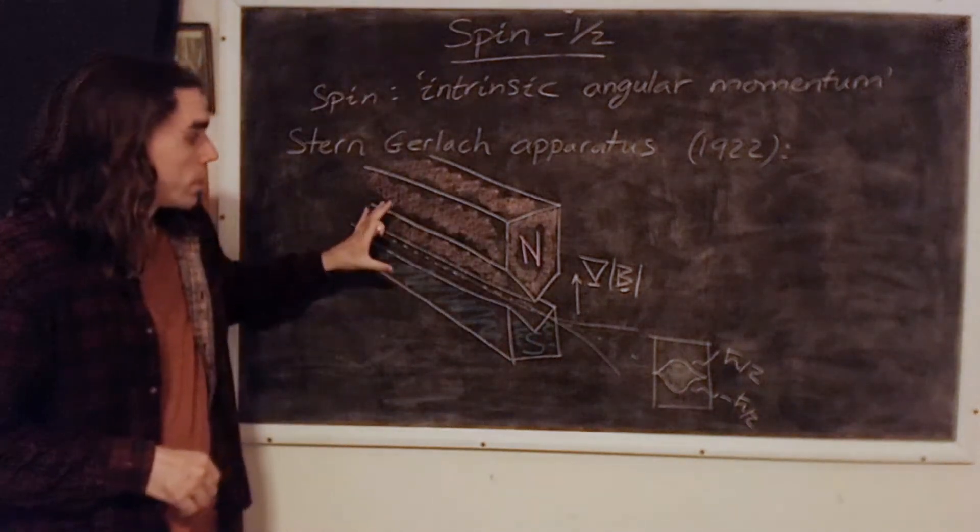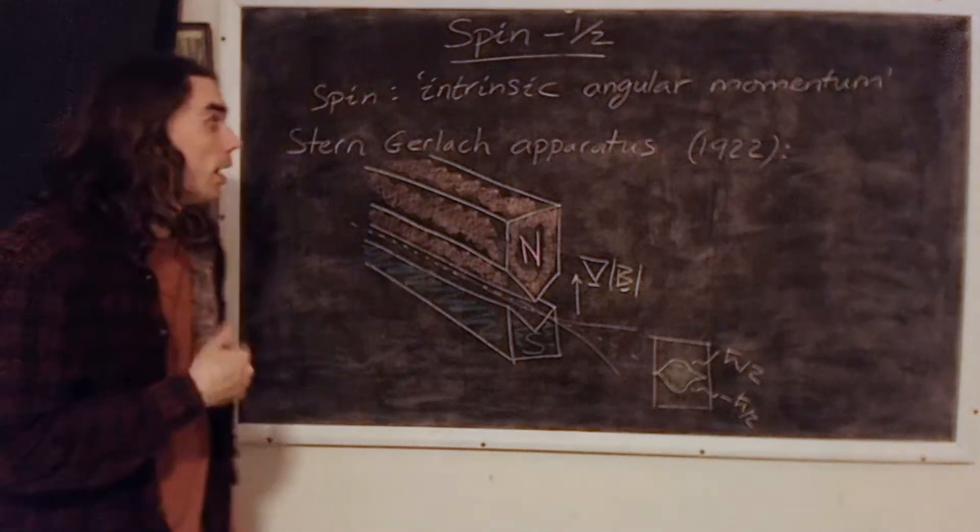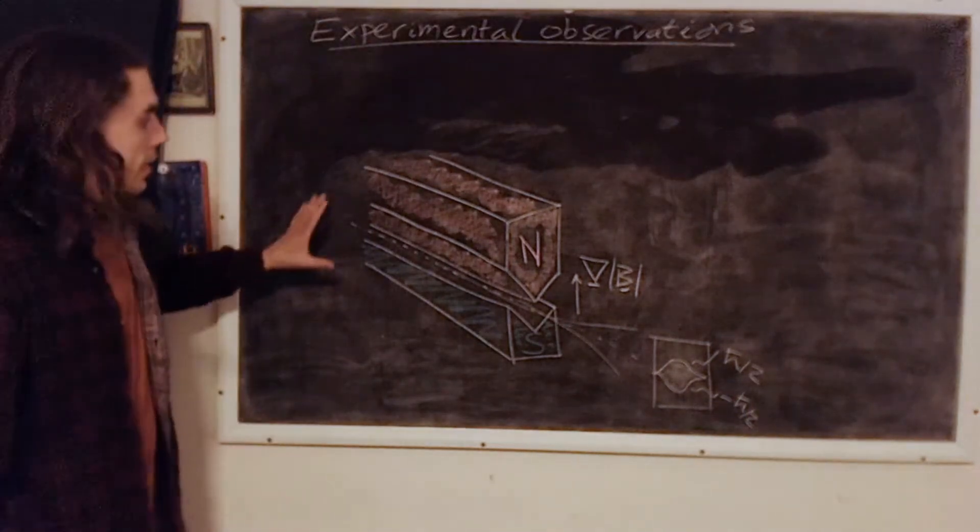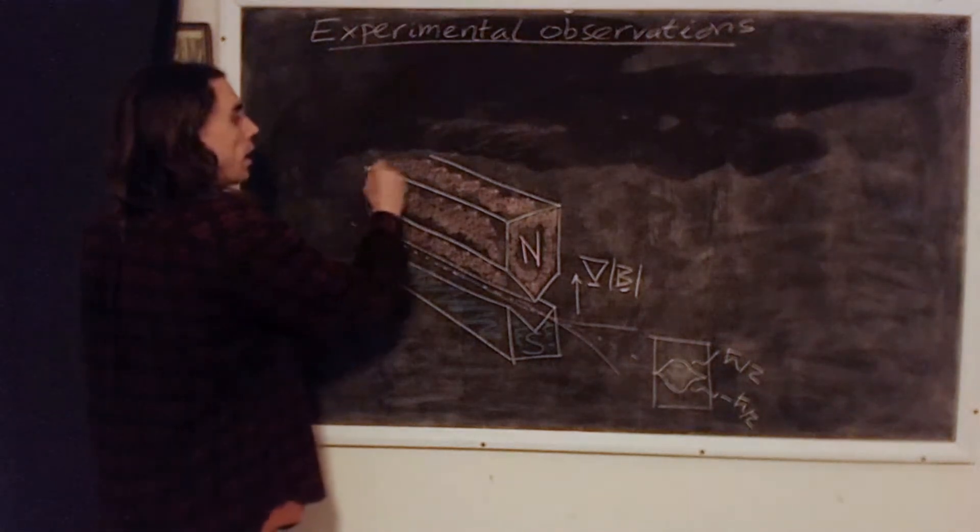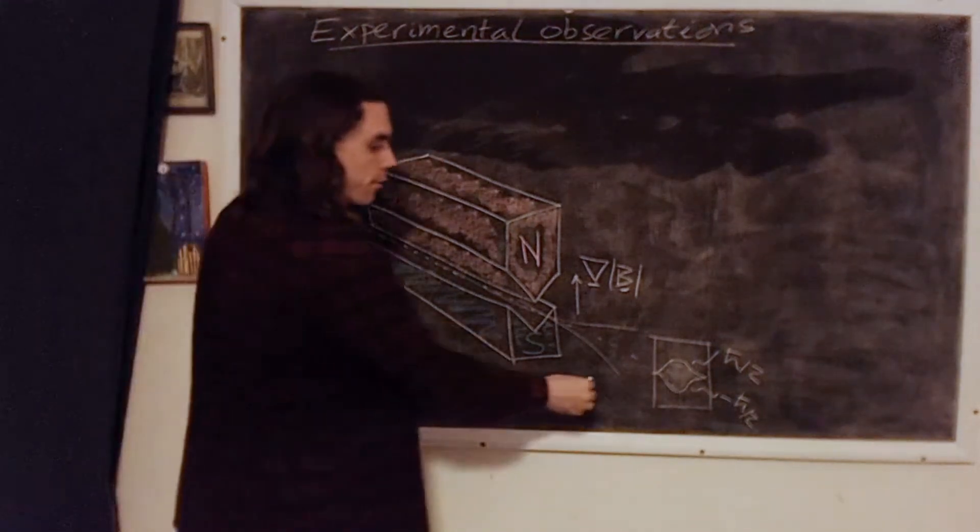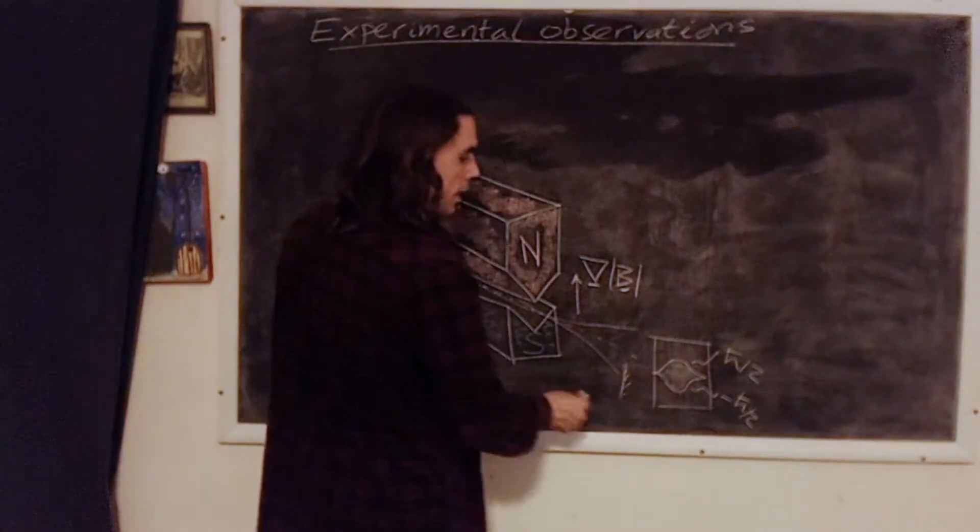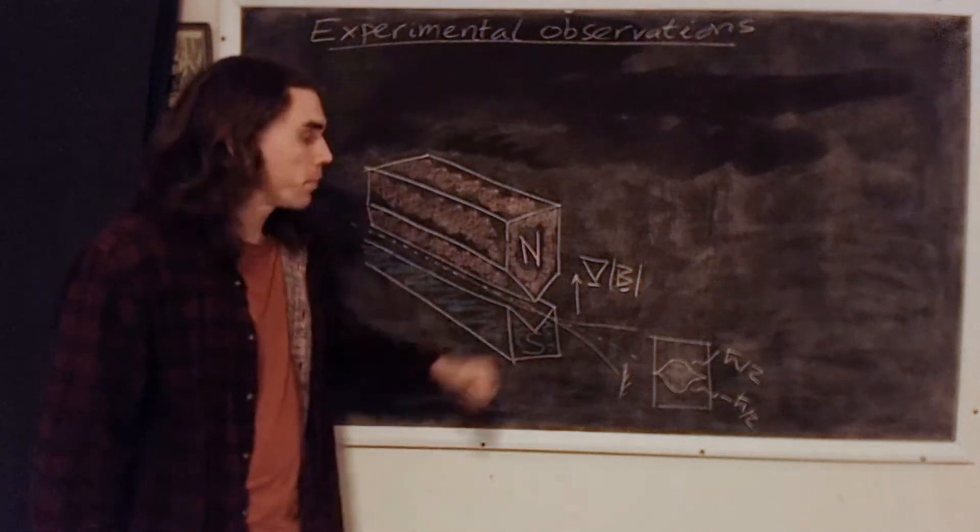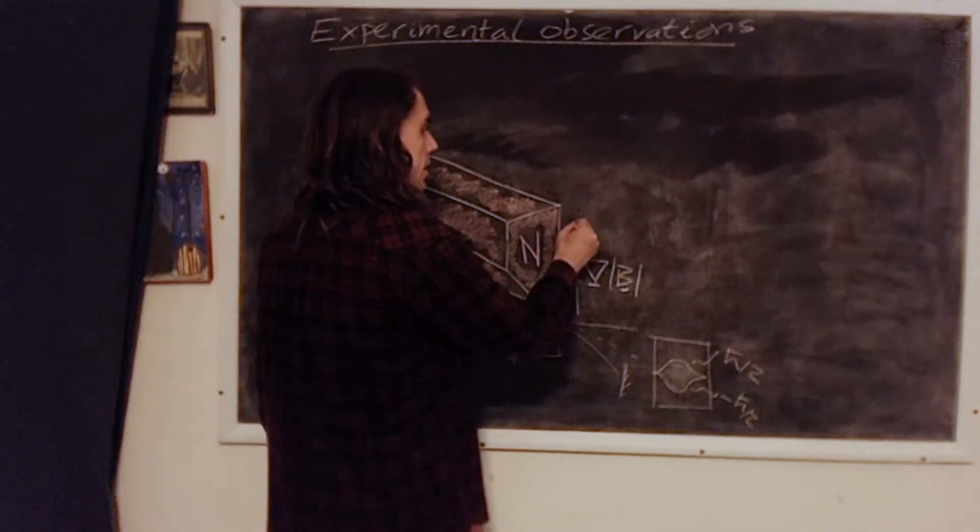So we can deduce various things from applying these Stern-Gerlach apparatuses to beams of electrons. Here are the experimental observations. Taking our Stern-Gerlach apparatus, we can place a block in front of one of the two beams. So for example, we can block off this beam down here, and then we'd be guaranteed to have spin plus a half, or what's called spin up, in this direction. And let's define this direction to be z in this case.